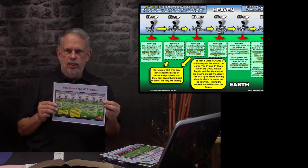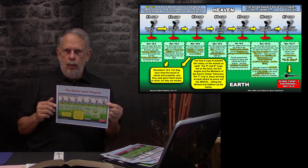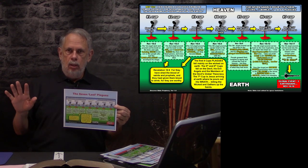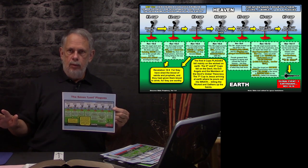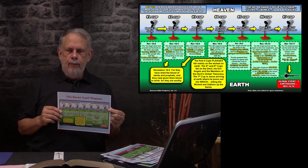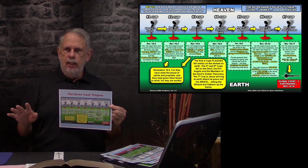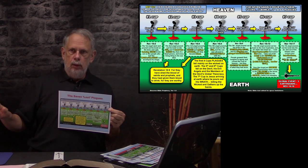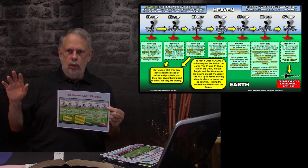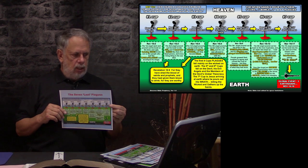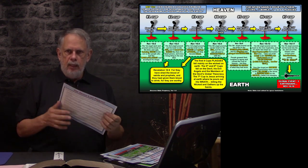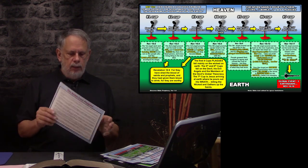Finally, the last storyboard is the seven last plagues. The seven last plagues will fall on all the wicked. Prior to the seven last plagues, all the saints on earth will be sealed and protected from any evil that would come upon them. So the seven last plagues fall on the devil, his one world empire, and on Babylon. We have the details on the back.